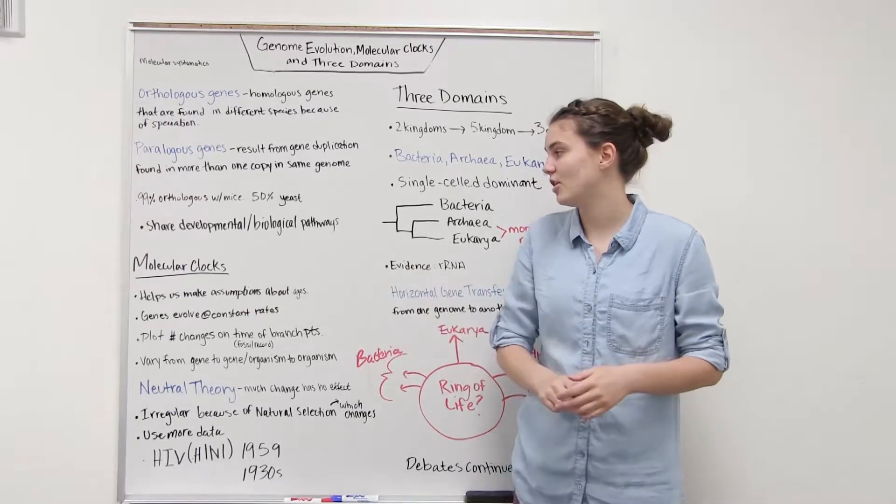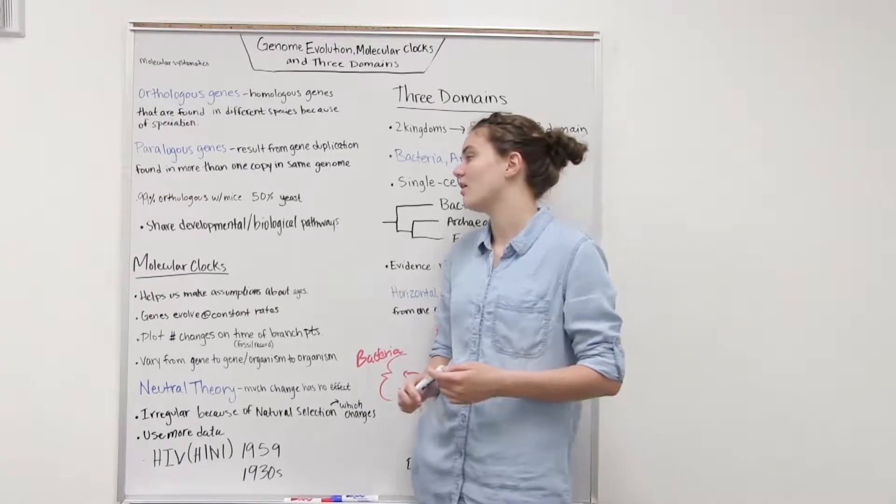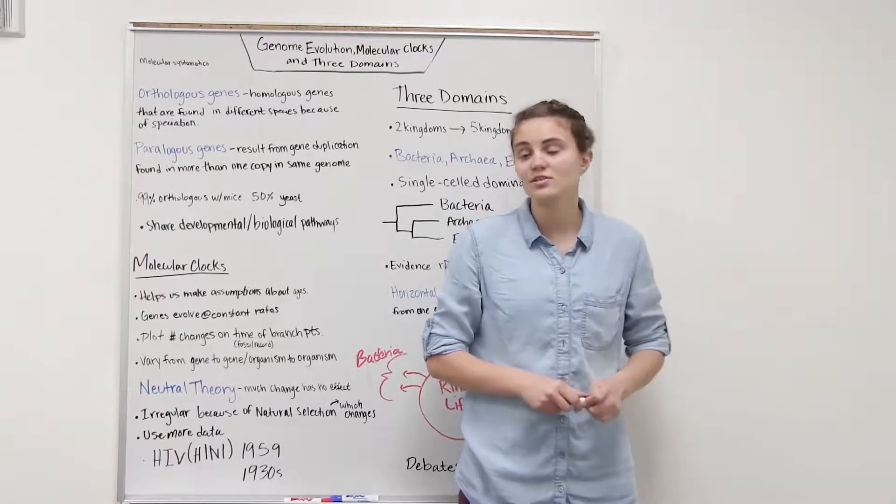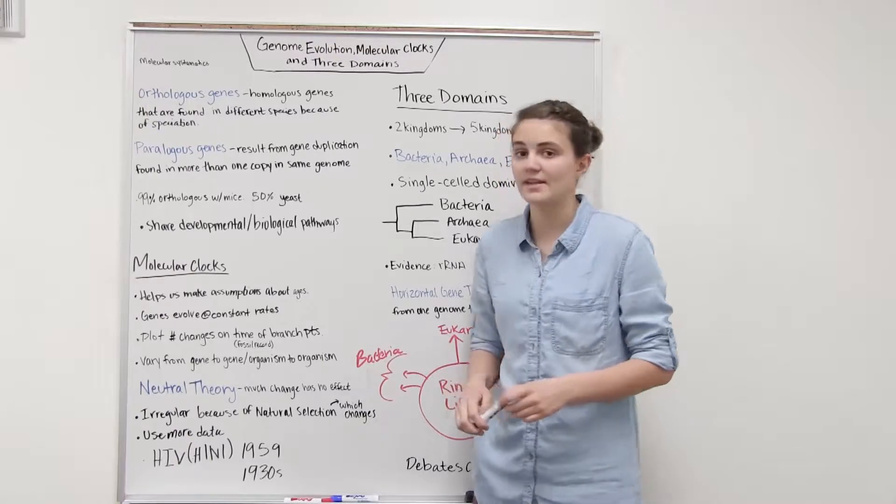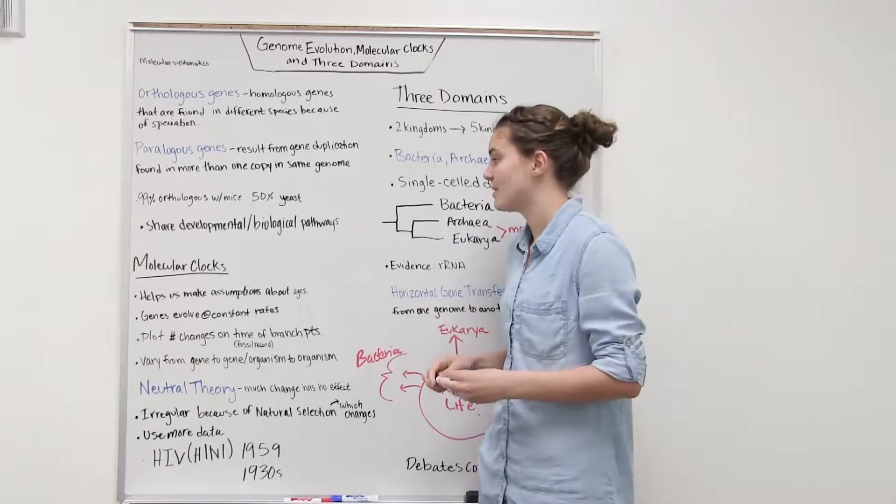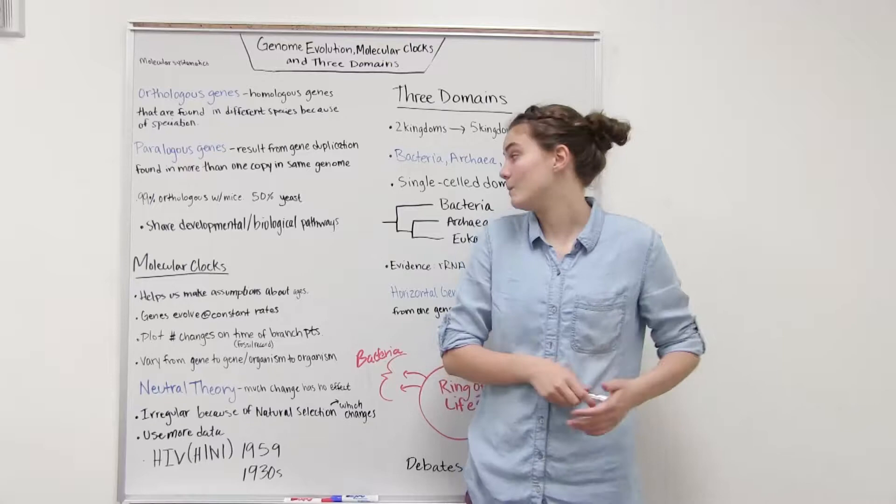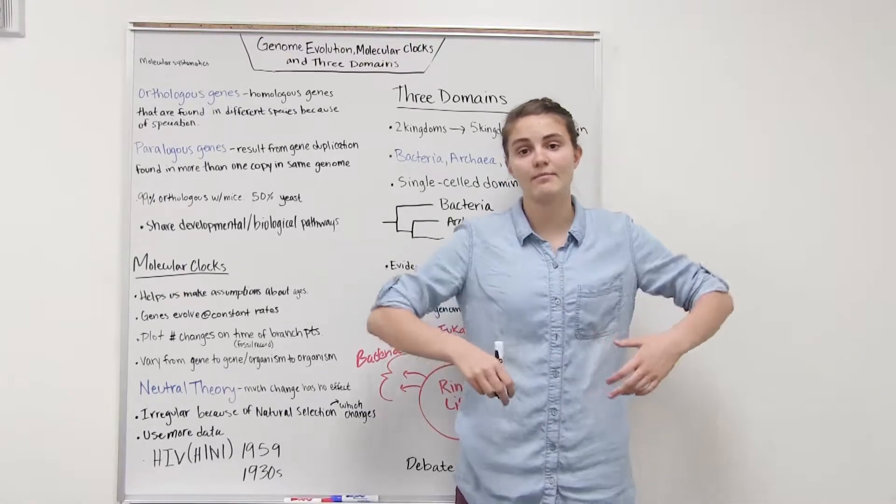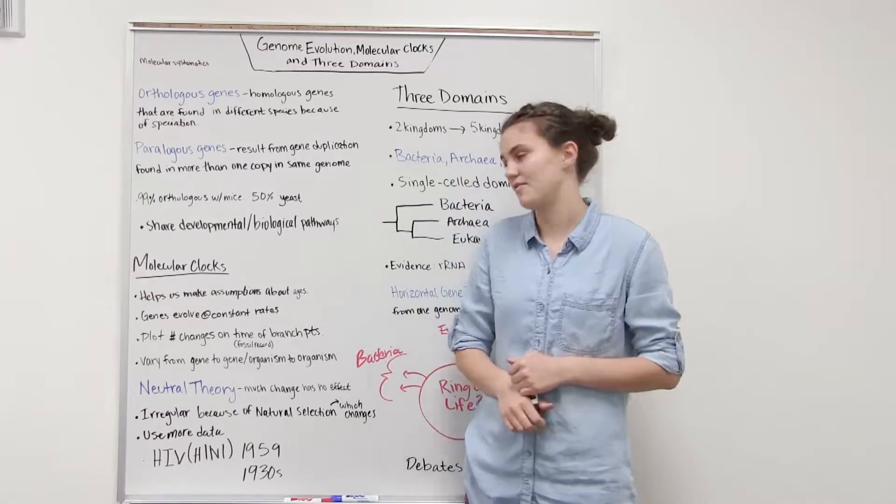Something interesting to note is that 99% of our genes are orthologous with mice and 50% are with yeast. That just goes to show that most of life shares many developmental and biochemical pathways. They're very similar. Even if we don't look a lot the same, a lot of the ways in which we work are very similar.